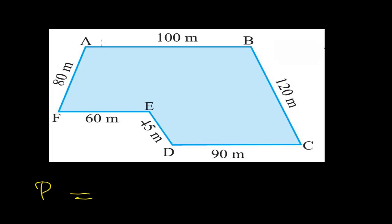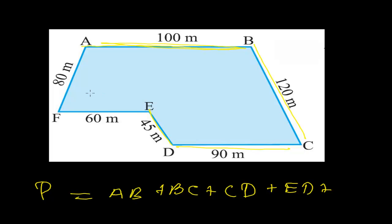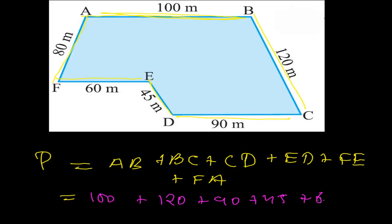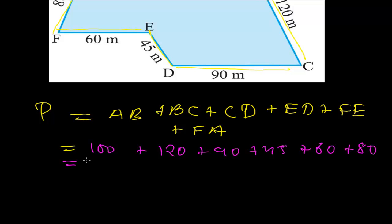This next one is another question — we'll be adding all sides again. Let's add side AB, then BC, then CD, then ED, then FE, and finally FA. The measurements are: AB = 100 meters, BC = 120 meters, CD = 90 meters, DE = 45 meters, EF = 60 meters, and FA = 80 meters.